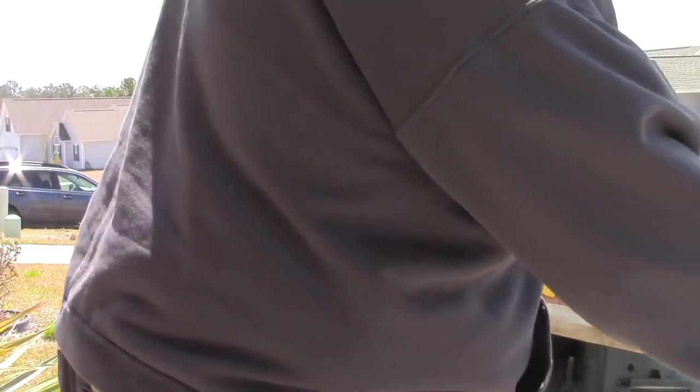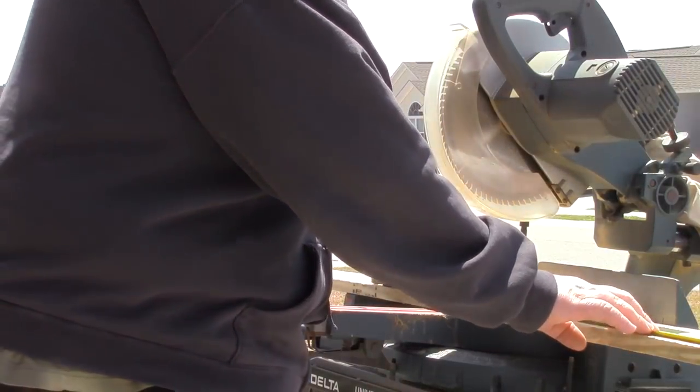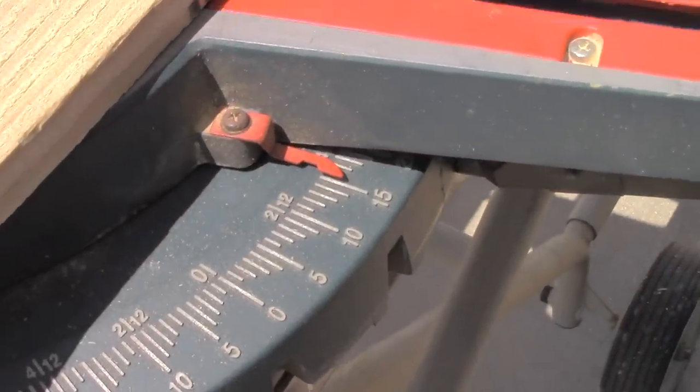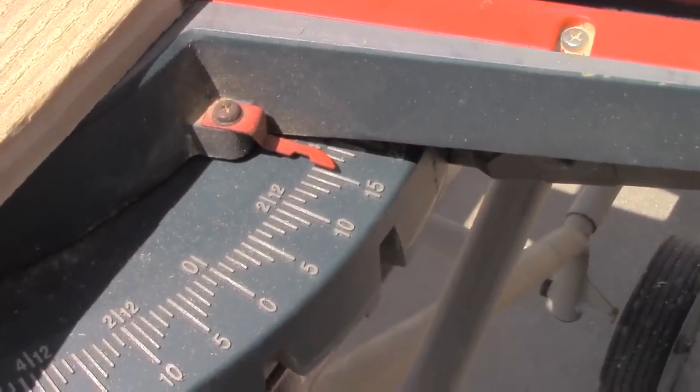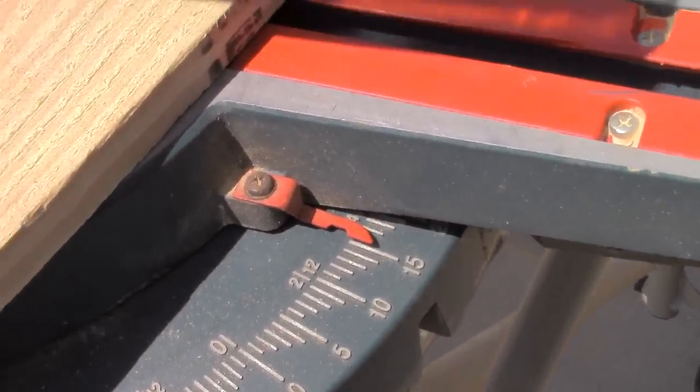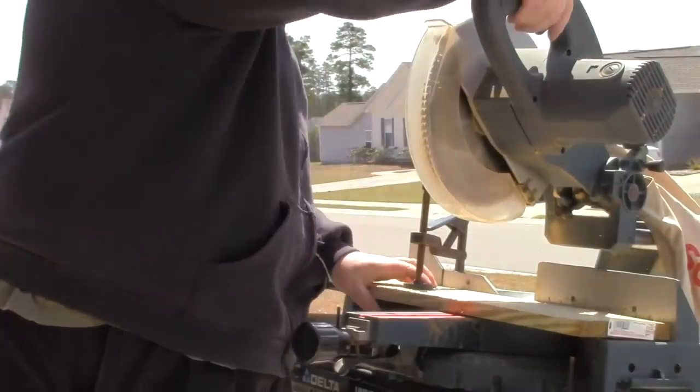Your first cut is going to be the roof line. And that's going to be at 15 degrees. So you're going to want to set your miter to 15 degrees and make your cut.